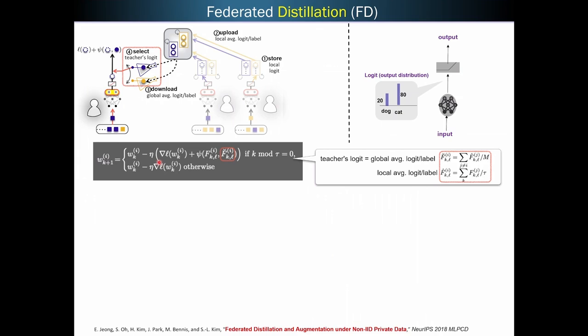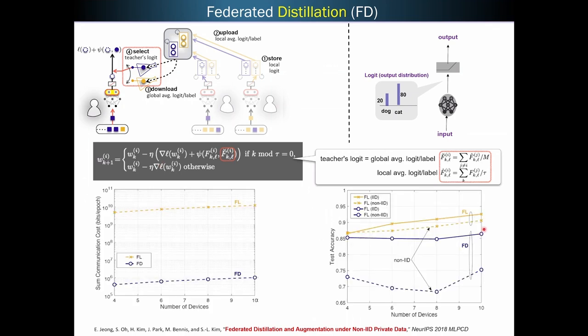Now looking at the results. Here we compare federated learning and federated distillation in terms of communication costs. You can see huge gains in terms of communication savings here. When you use federated distillation, there is a small hit in performance. For example, if you look at test accuracy, from 92% to 85%, but you can actually bridge this gap, which is something we did in follow-up.